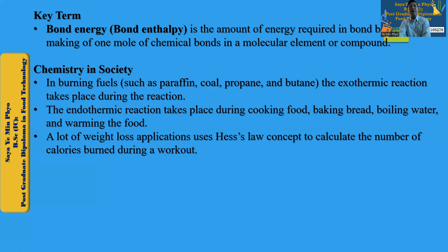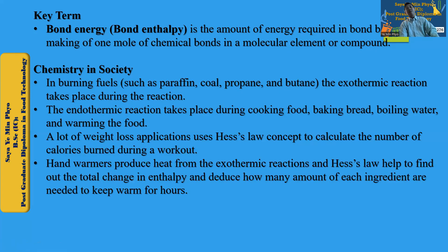Another way is to apply Hess's Law. Hess's Law is asking about the enthalpy of every step. It's called the calorie pattern, so one can recommend which is actually true. To find out the total energy change, determine how many amounts of each ingredient are needed.